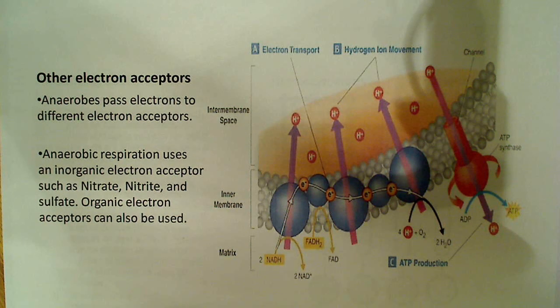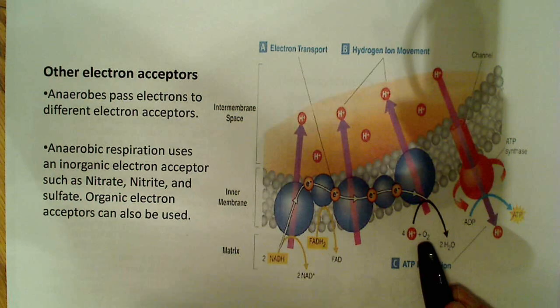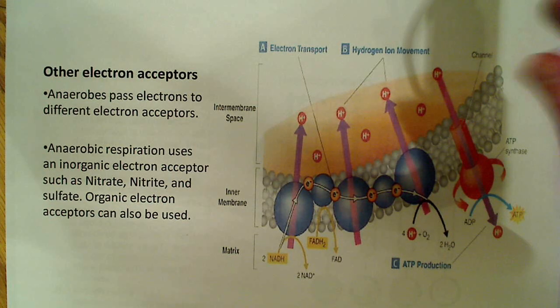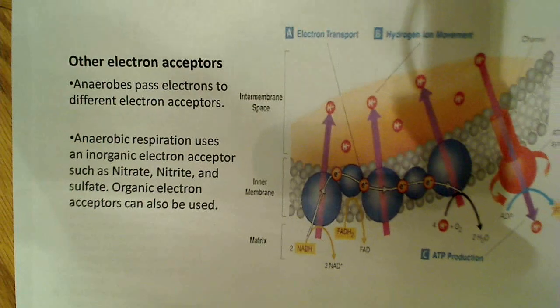In some cases, they can also be organic electron acceptors. In the classic sense, you see oxygen as the final electron acceptor - you'd see this replaced by something like nitrate or nitrite, or an organic molecule for anaerobic organisms.